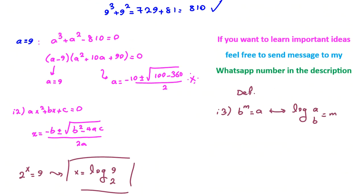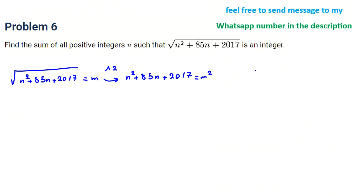Now I want to tell you an identity, a basic identity: a plus b whole squared equals a squared plus 2ab plus b squared. Because of this identity, I want to write these two things as something squared to cover n squared and 85n. So it will be n plus 85 over 2 squared, which gives n squared plus 85n plus 85 over 2 squared. So I should subtract 85 over 2 squared plus 2017 equals m squared.